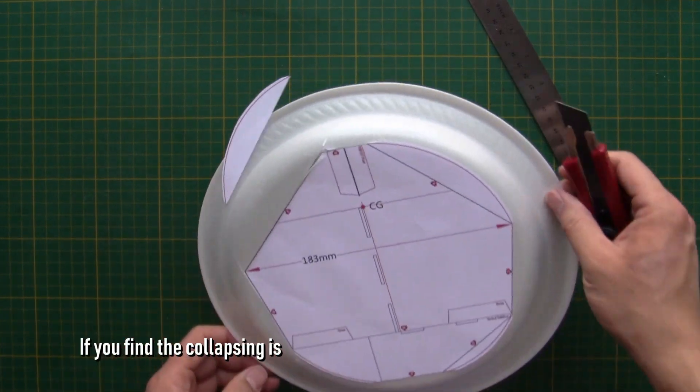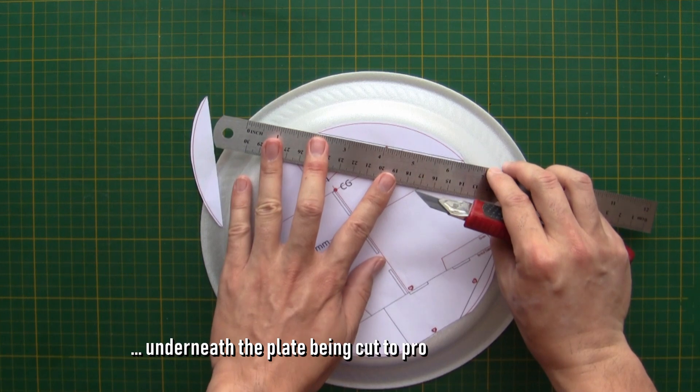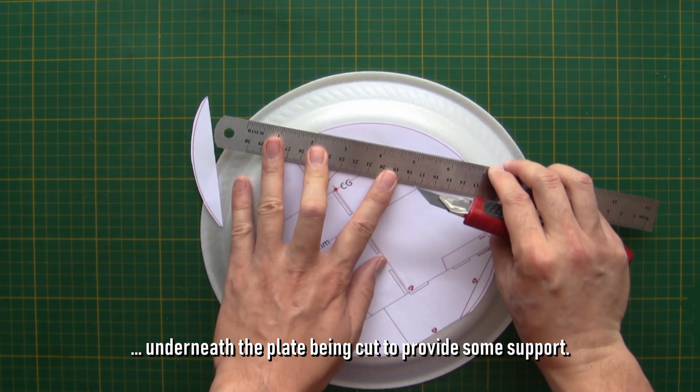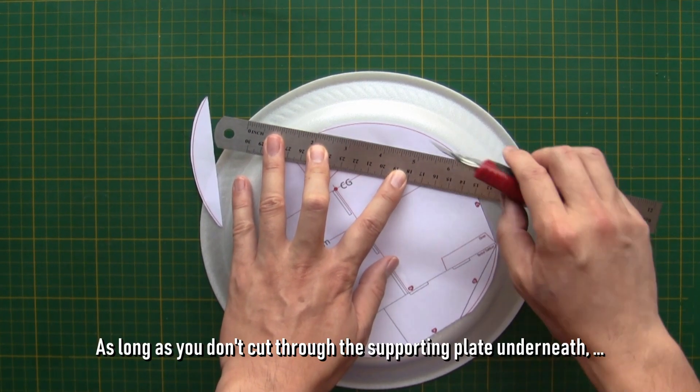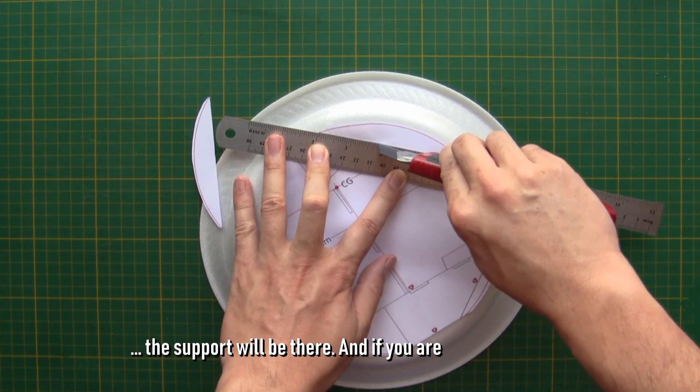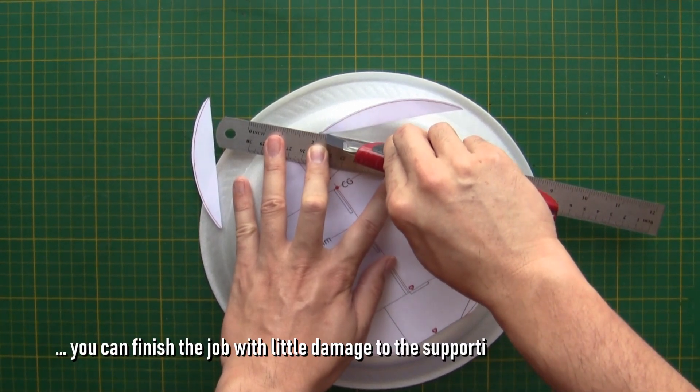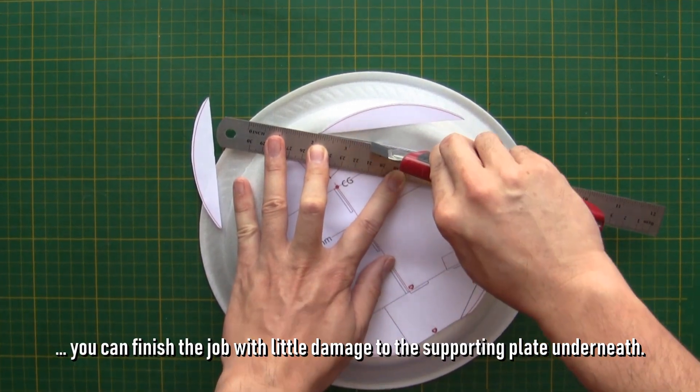If you find the collapsing is a problem, you can put another foam plate underneath the plate being cut to provide some support. As long as you don't cut through the supporting plate underneath, the support will be there. And if you are really careful, you can finish the job with little damage to the supporting plate underneath.